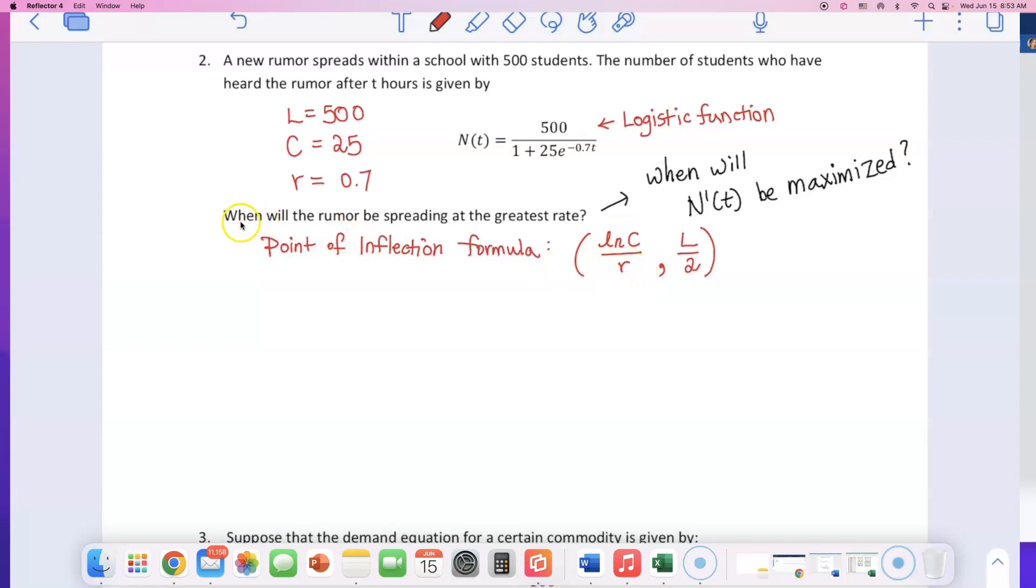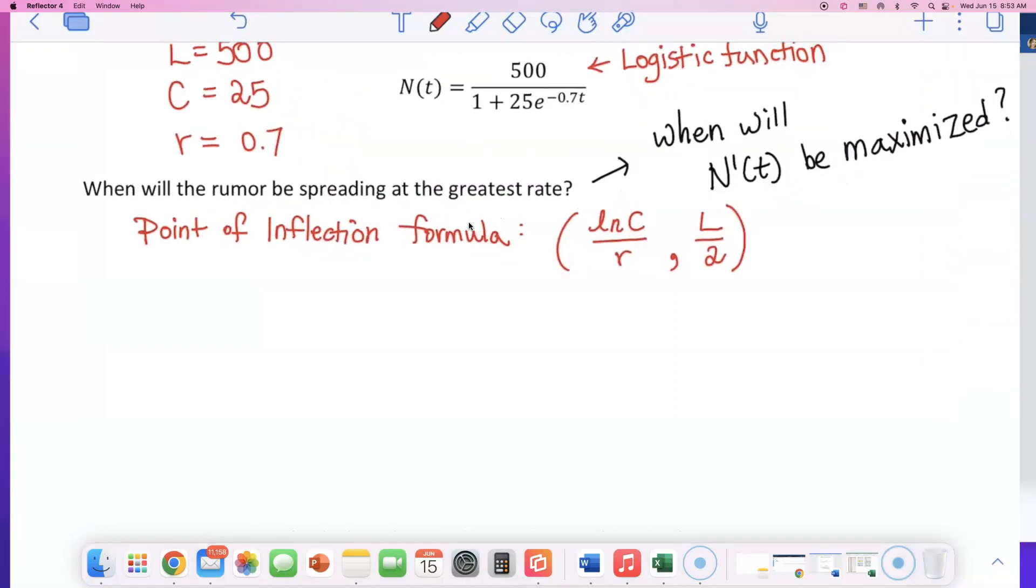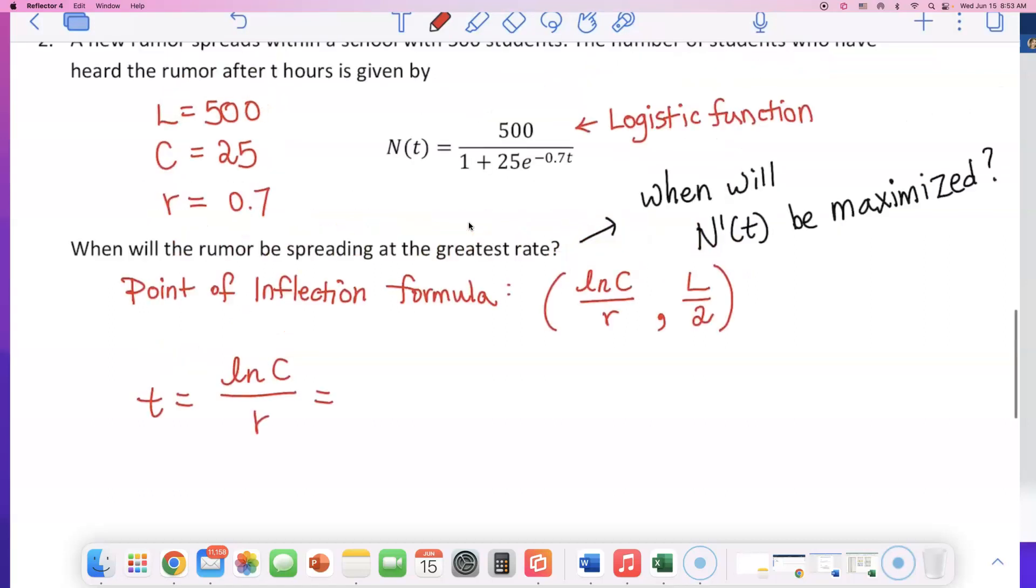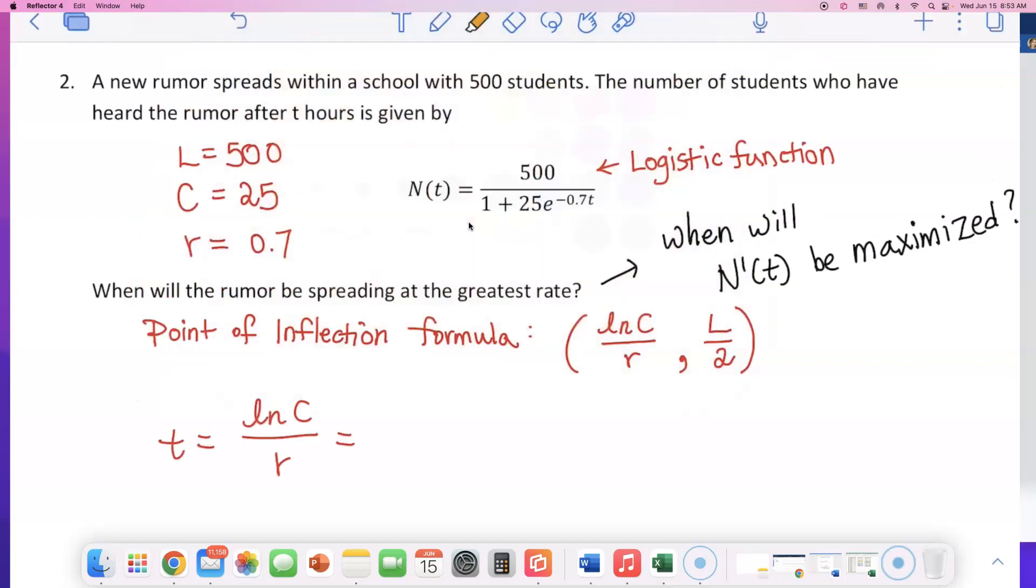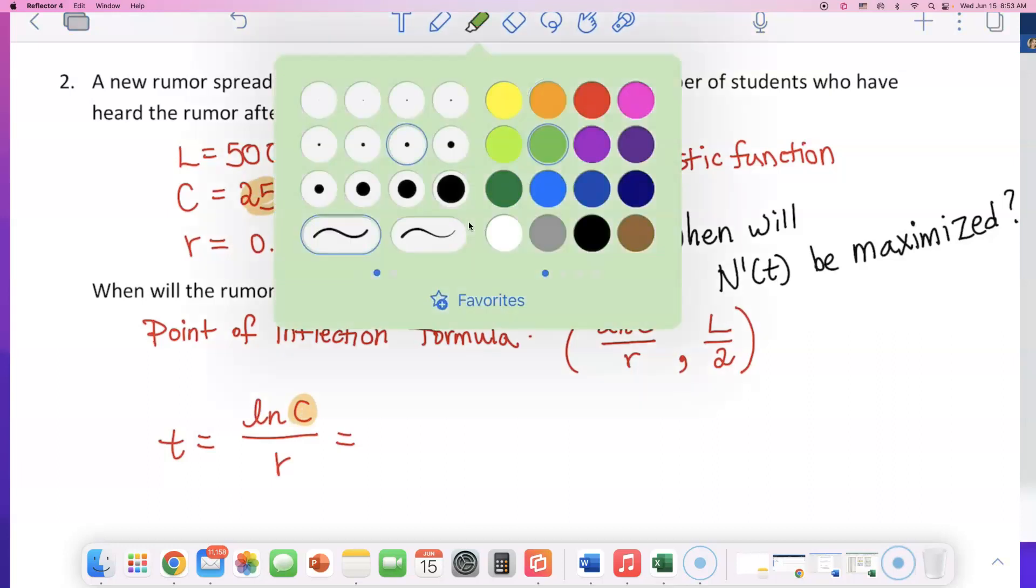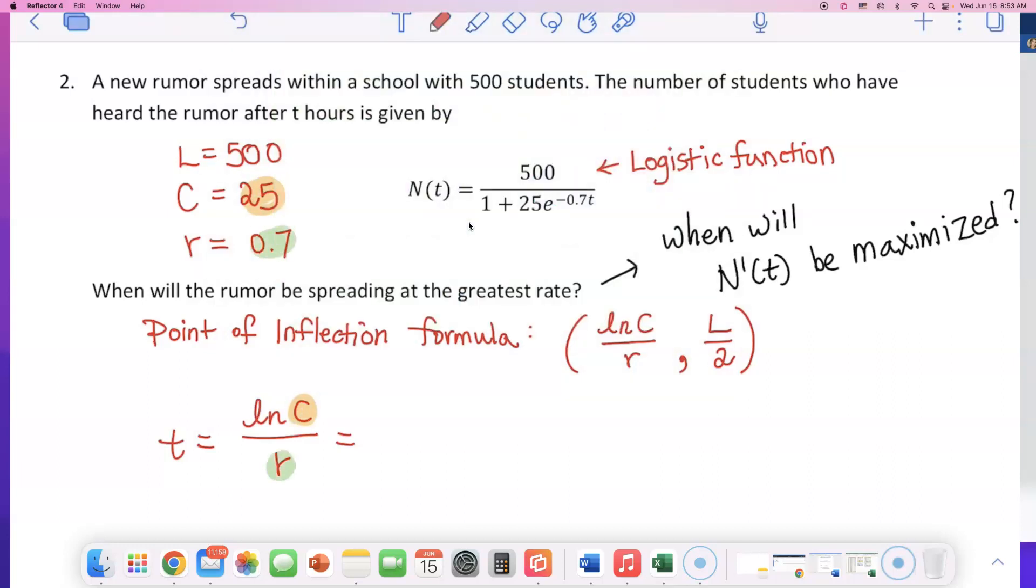Let's go ahead and find the moment the rumor will be spreading at the greatest rate. That will be t equals natural log of c divided by r. And now, what was the c value? c was 25. So you're going to have to plug in 25 there, and r was 0.7. So you just have to plug in that 0.7 over there. We don't really care about that L. That's going to give us the y coordinates. So natural log of 25 divided by 0.7.